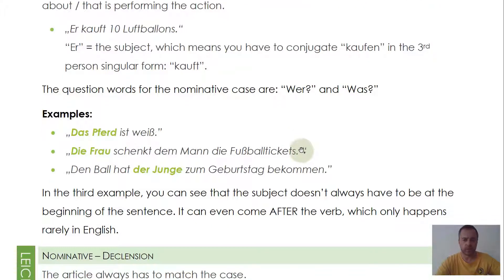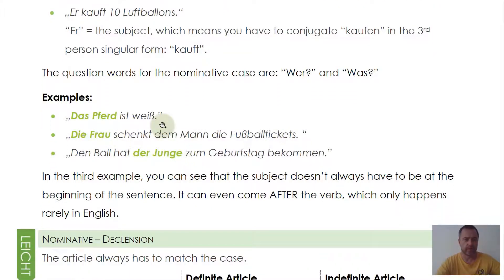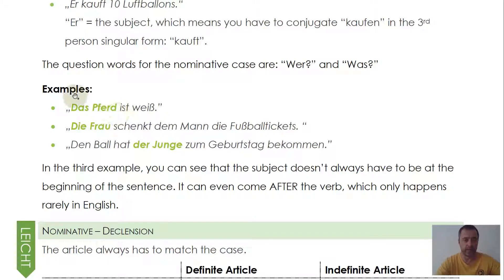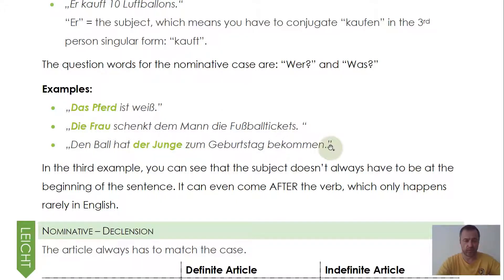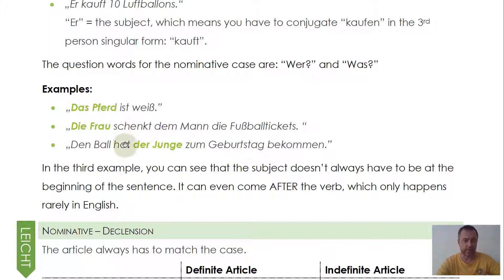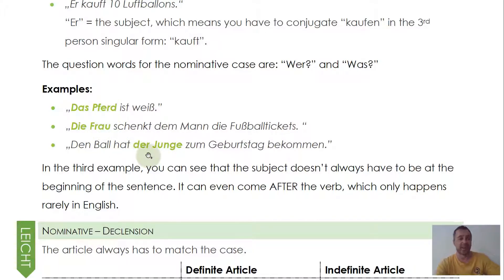Let's look at a few more examples for nominative case. 'Das Pferd ist weiß' — the horse is white. 'Die Frau schenkt dem Mann die Fußballtickets' — the woman gives the football tickets to the man as a present. 'Den Ball hat der Junge zum Geburtstag bekommen' — the boy got the ball for his birthday. Green always marks the subject. You can see that, different from English, the subject does not have to be in front of the verb — it is there most of the time, but it doesn't have to be.